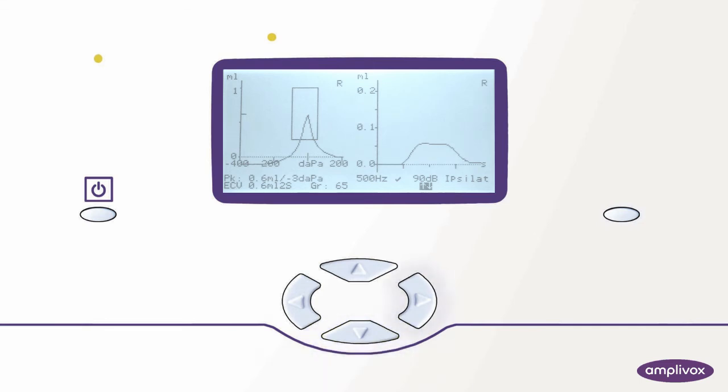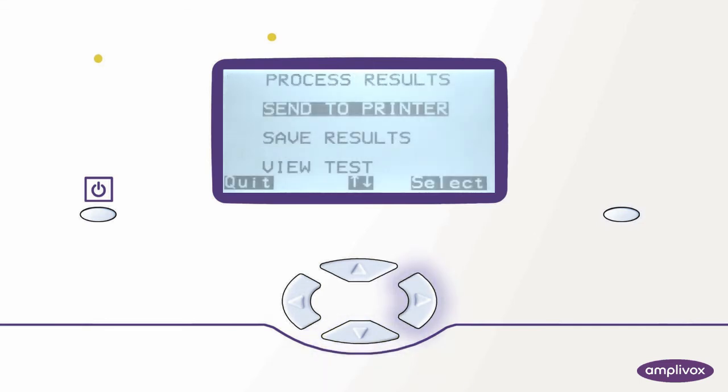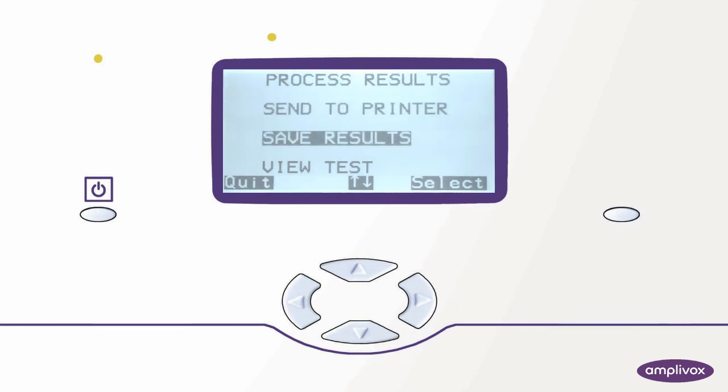If you want to process the data, select the right key to have a look at your options. You can now decide if you want to print the test results, save them to the internal memory, review them again, or return to the main menu to continue with another test.